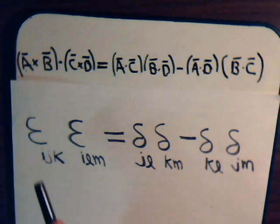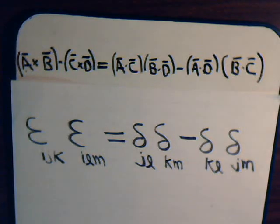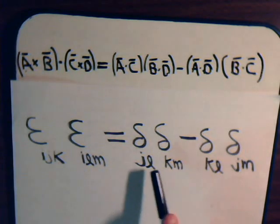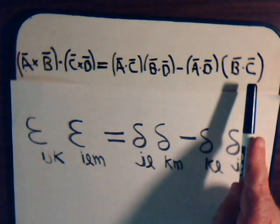In videos 8 and 9, we proved this identity with the epsilon permutation symbol and the Kronecker delta symbol. Now we're going to use this to prove this vector identity.